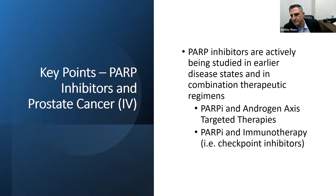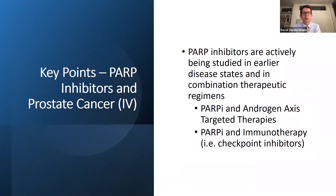Dr. Vanderweel adds: especially if there's a germline mutation, the assumption is that there is also a somatic mutation, whether or not it was identified. For these studies, they don't require that you identify alterations in both alleles — only one alteration in one of the genes, with the assumption that much of the time there is another alteration in the other allele, and that these are biallelic alterations. It's a difference between what's happening biologically and what we're able to identify in our assays. For germline mutations, they are usually biallelic.